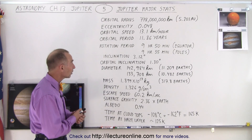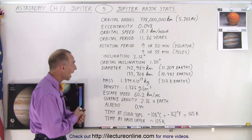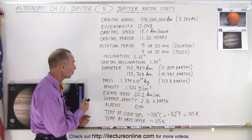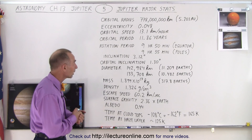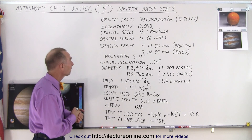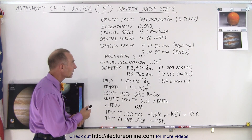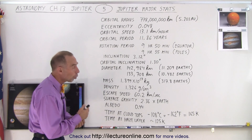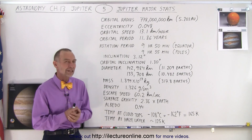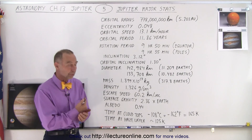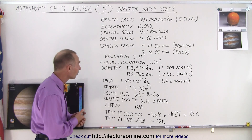The orbital speed is a little bit less than half what it is for the Earth — 13.1 kilometers per hour. And the orbital period: it takes Jupiter almost 12 years to make one trip around the Sun.